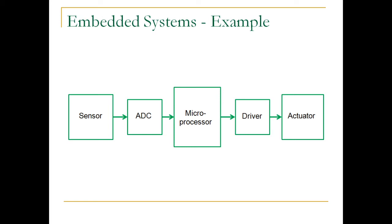The processing will be done there. Finally, the microprocessor should control the actuator. For example, your ceiling fan operates on 230 volt AC and takes less than 1 amp current. But your microprocessor cannot supply that much current — typically a microprocessor can supply around 20 micro amps, while your fan requires around 1 amp. So how will you control the fan? You cannot control it directly. You need a kind of circuit known as a driver. With a low current signal, you are going to control a high current device — that is known as a driver. This driver can be either an amplifier or a switching device such as a relay or contactor. So the microprocessor will control the actuator with the help of a driver.